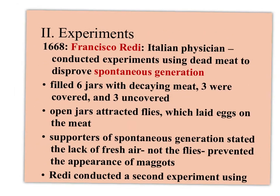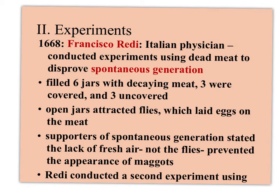The first scientist we'll discuss, other than Aristotle, is Redi. Redi lived in the 1600s in Italy — he was an Italian physician. He did experiments using rotten meat and wanted to disprove spontaneous generation. You need to know what each scientist's basic experiment was and whether they were trying to prove or disprove spontaneous generation. Redi is associated with meat — he's the only scientist who specifically experimented with meat.